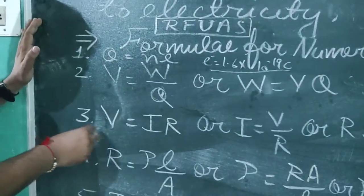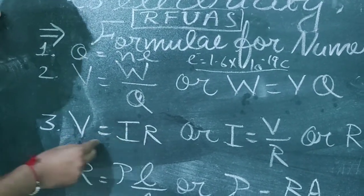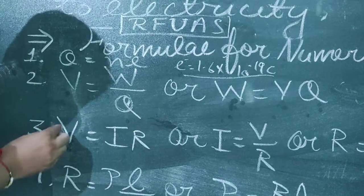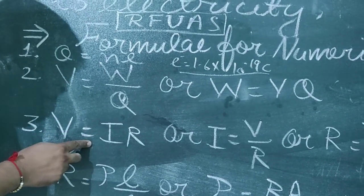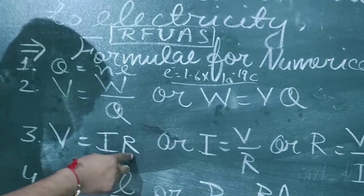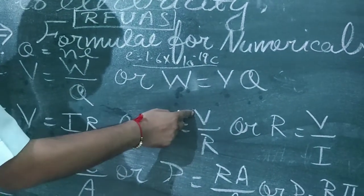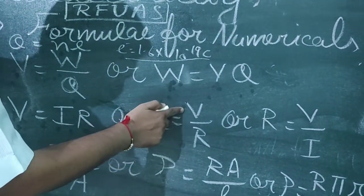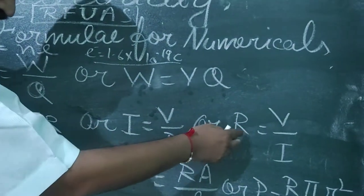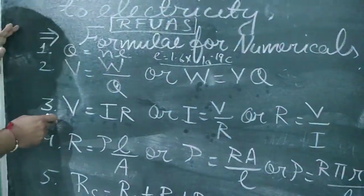The third formula is V = IR. We get this formula with the help of Ohm's law, which states that voltage or electric potential is equal to I × R, where I is electric current and R is resistance. With the help of this, we can also get the formula for electric current: I = V/R. Another formula is resistance R = V/I.